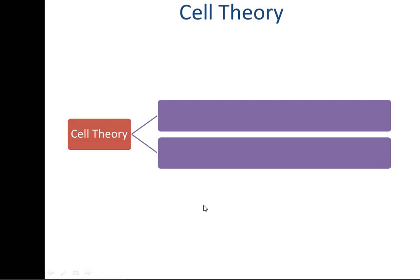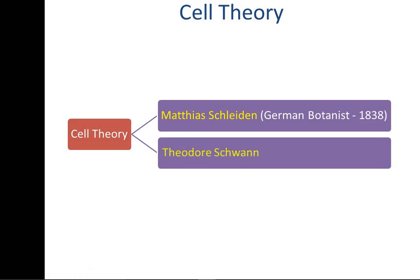Cell theory was proposed by two scientists: namely Matthias Schleiden, who was a German botanist, in 1838, and Theodore Schwann, who was a British zoologist, in 1839.